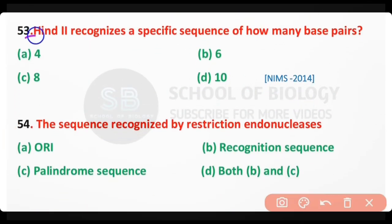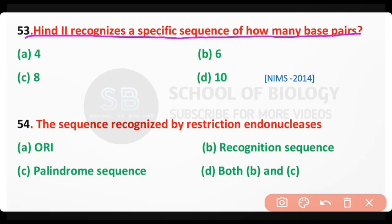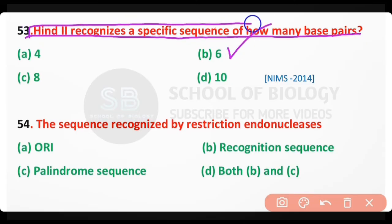Question number 53: HindII requires a specific sequence of how many base pairs — four, six, eight, or ten base pairs? The correct answer is option B. HindII restriction enzyme requires a specific sequence of six base pairs.